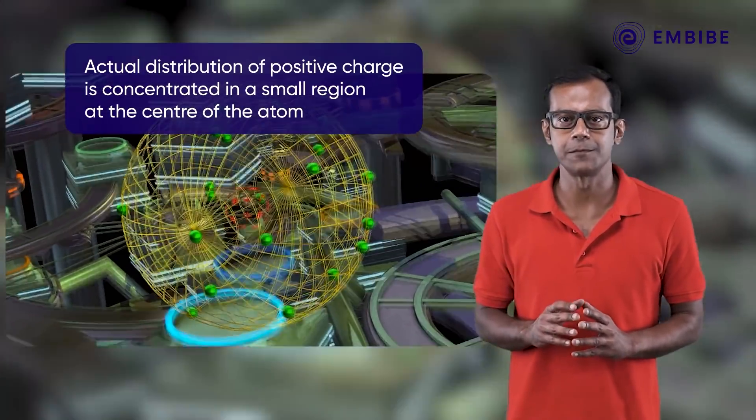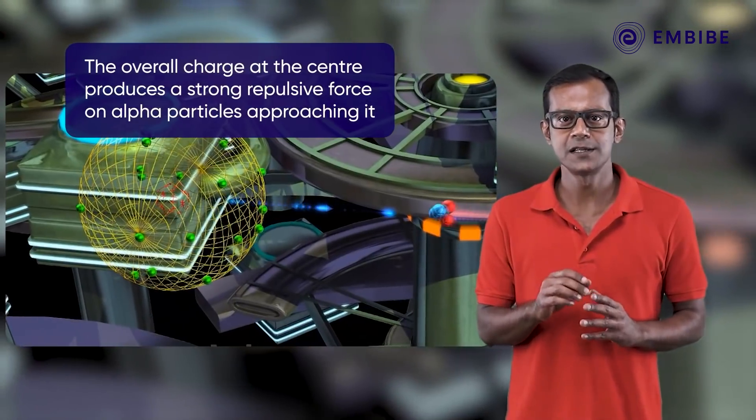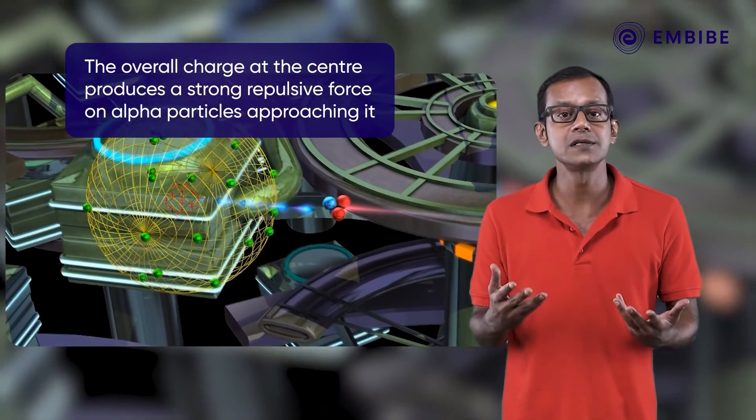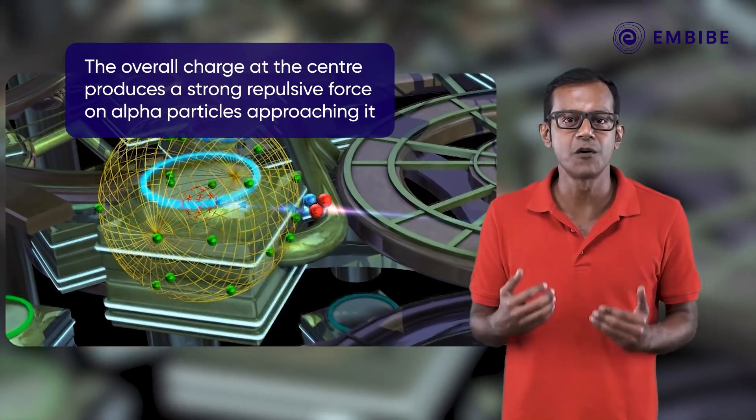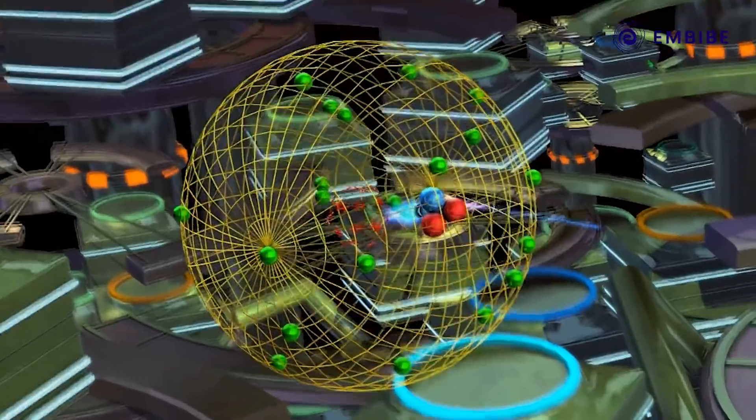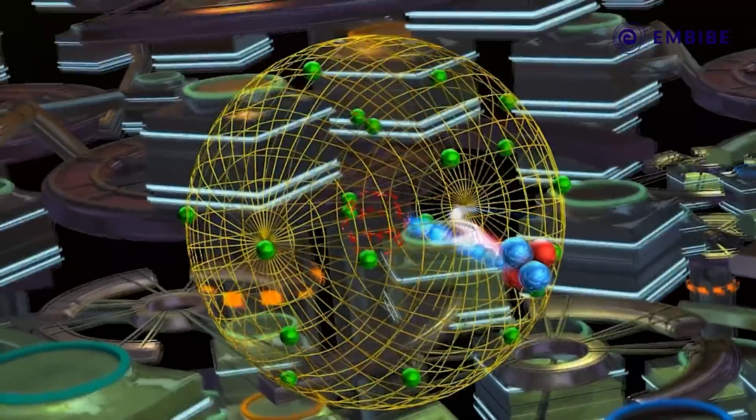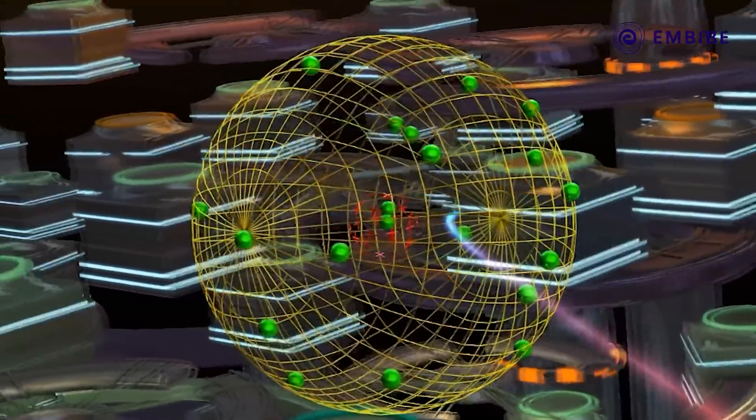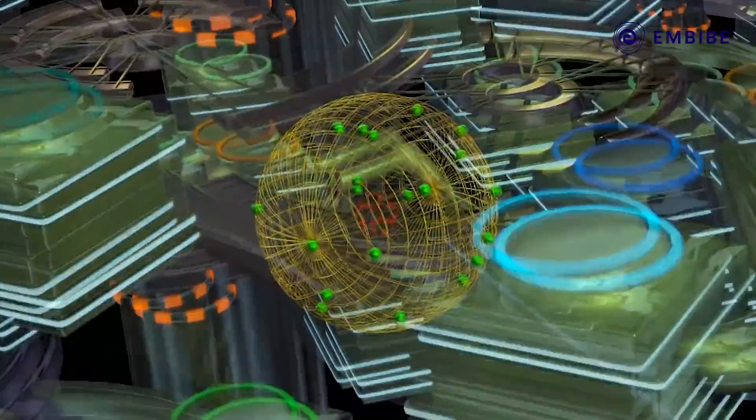The overall charge at the center produces a strong repulsive force on alpha particles approaching it. As a result, large angle scattering of alpha particles can take place.